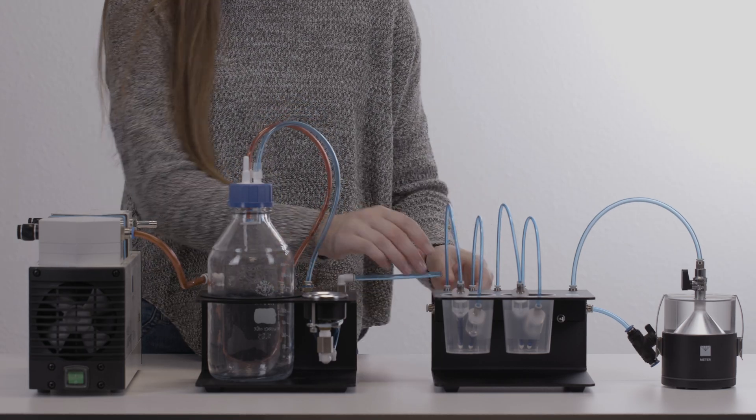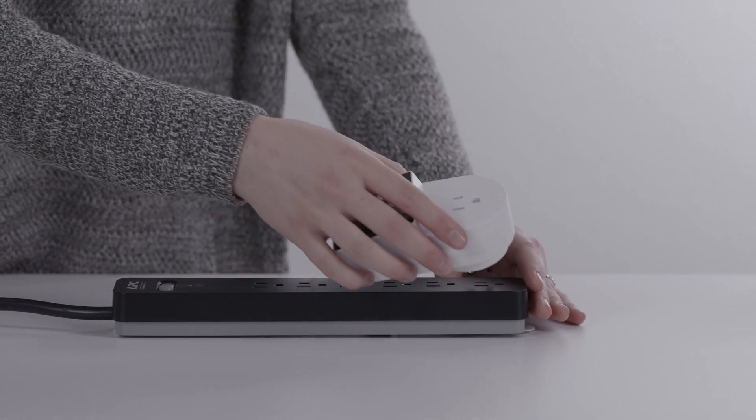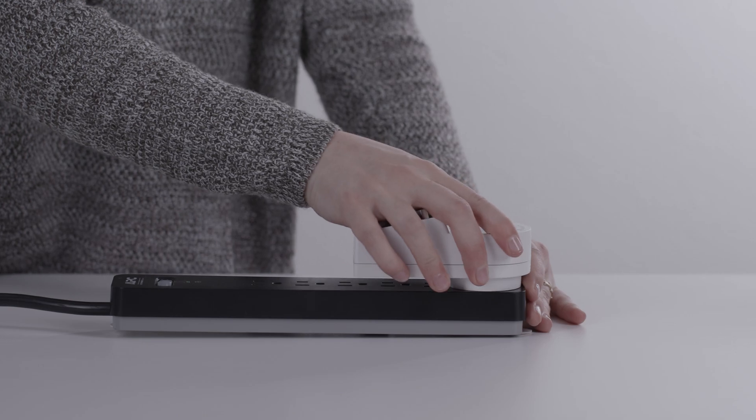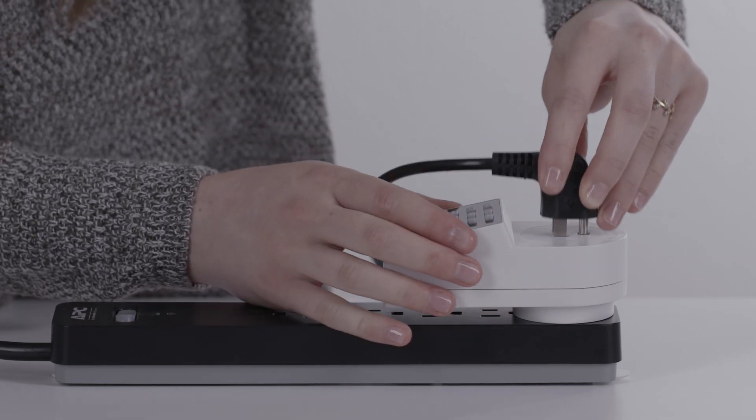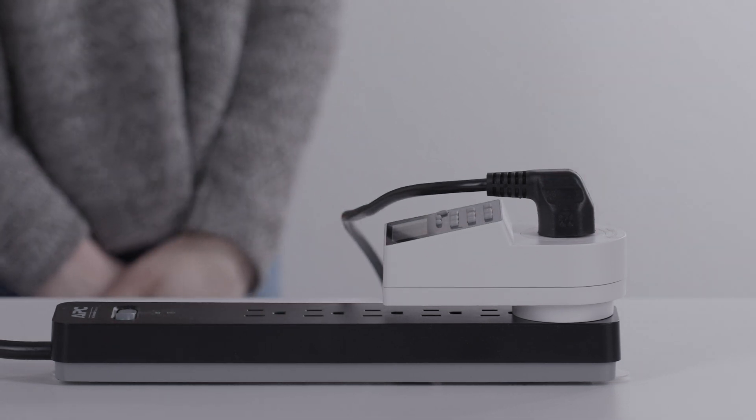Connect the tubes of the refill unit as shown. Connect the unit to a timer and the timer to the power outlet. A timer increases the pump life, saves energy, and reduces air bubbles that may be generated when the pump starts.